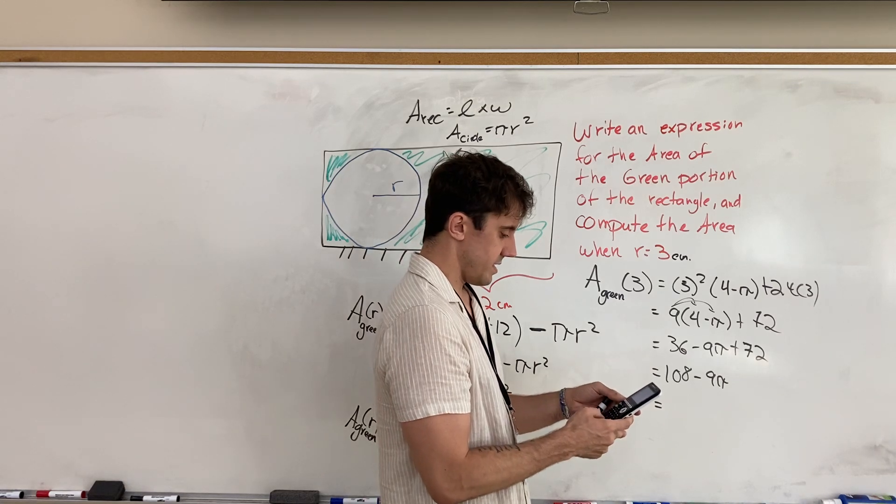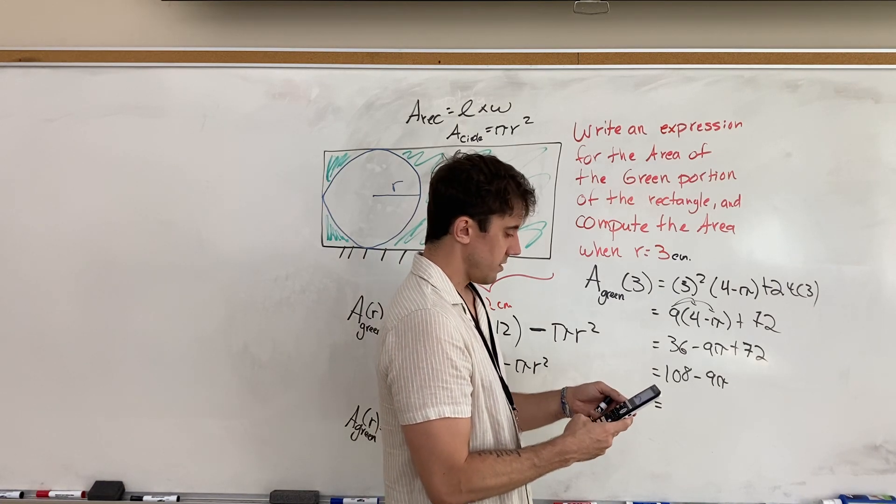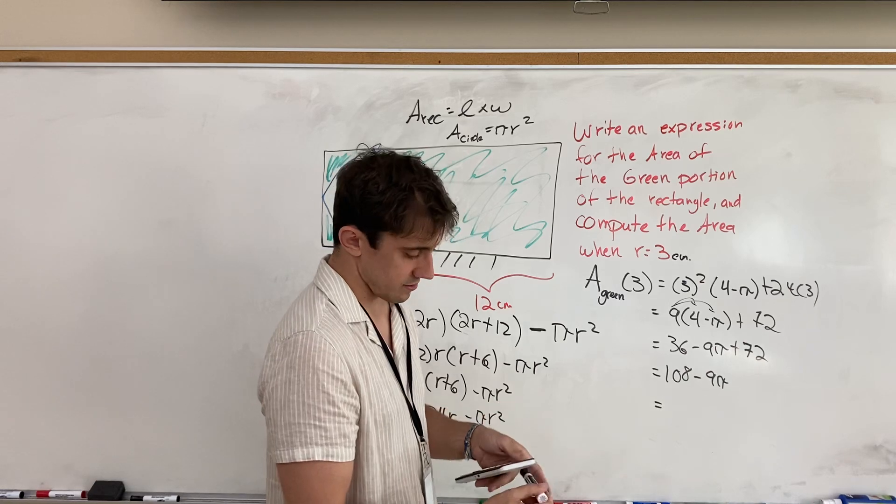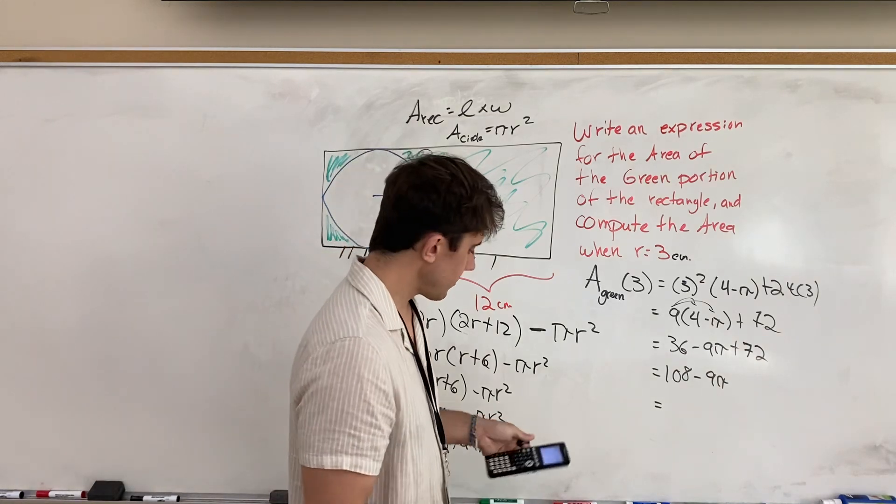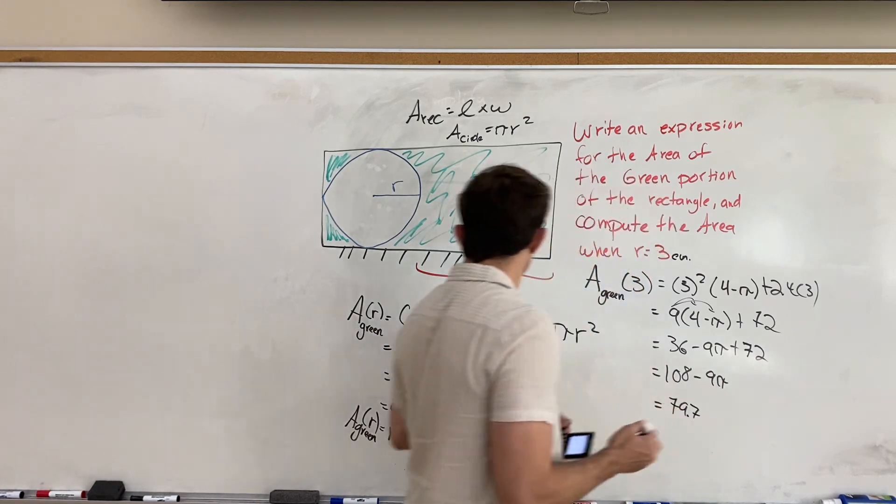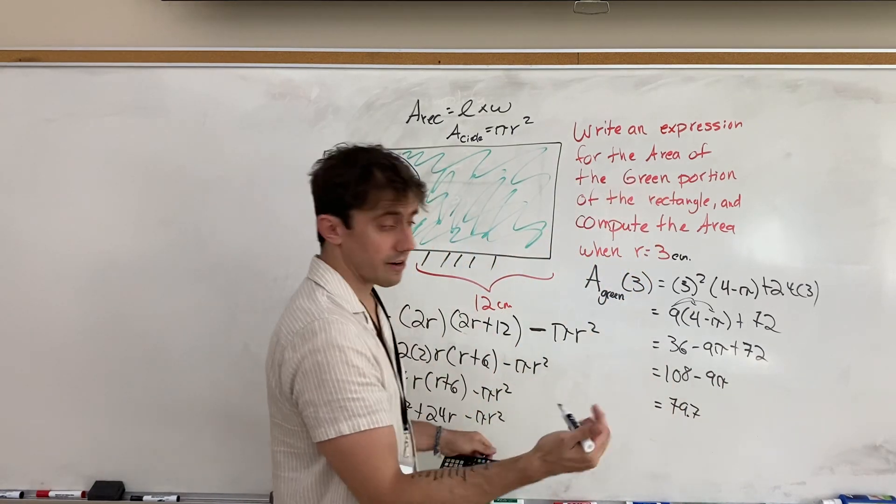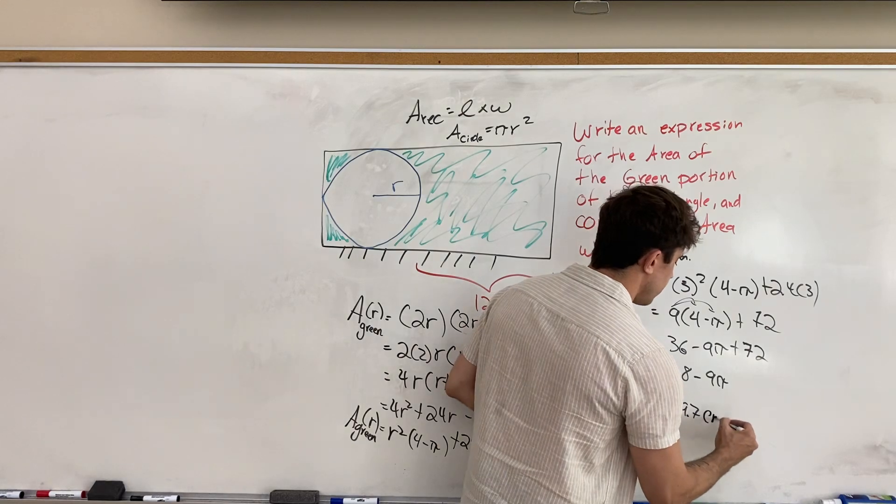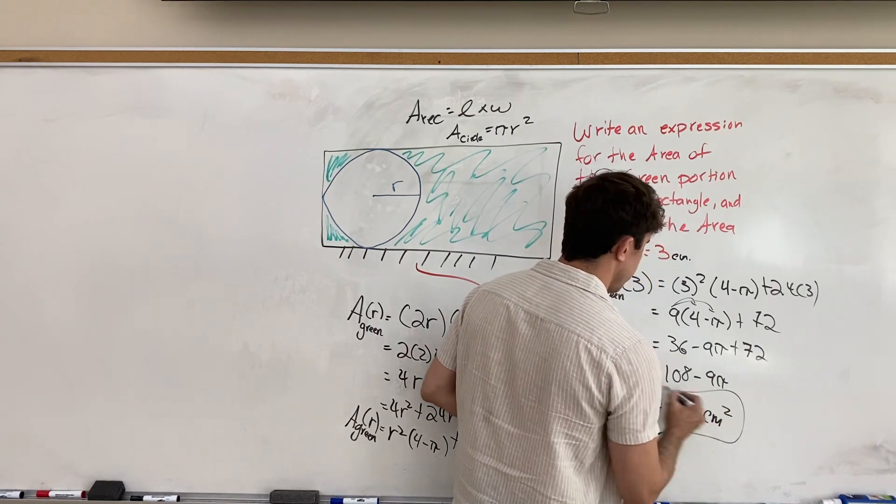108 minus 9 pi gives us an area of 79.7. We have centimeters in its area, and so our units are centimeters squared. And we're done.